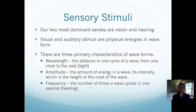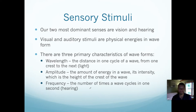The amplitude is the amount of energy in a wave, and the amount of energy determines its intensity. If a wave has more intensity, then it's brighter light or louder sound, and it's defined as the height of the crest of a wave. Finally, we have the frequency, which is the number of times that a wave cycles through in one second. This is especially important in hearing, and it turns out that wavelength and frequency are inverses of one another mathematically.